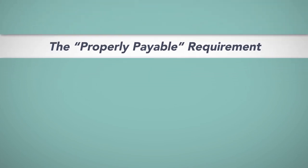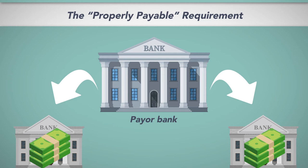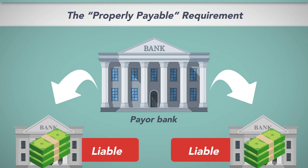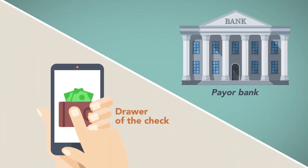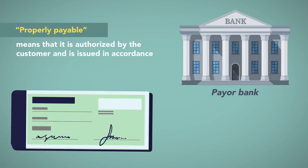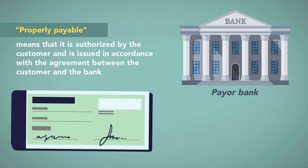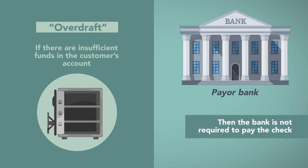The Properly Payable Requirement. Once the payer bank makes final payment, other settlements become final and the banks in the collection process become liable to their customers. Ultimately, the payer bank needs to collect the funds from its customer, who is the drawer of the check. It may only do so if the check is 'properly payable,' which means it is authorized by the customer and is issued in accordance with the agreement between the customer and the bank.